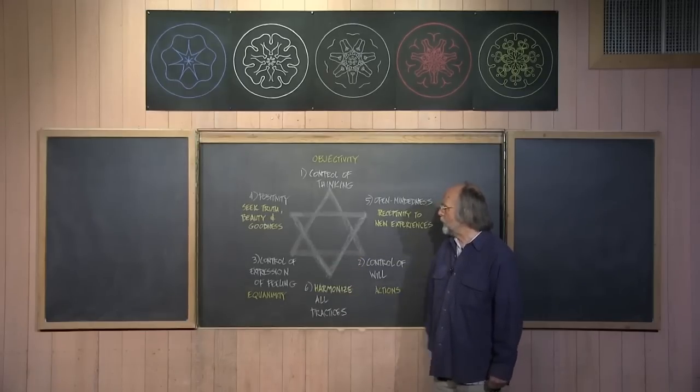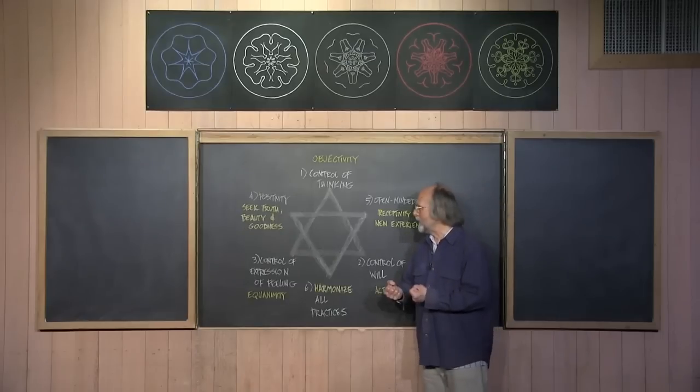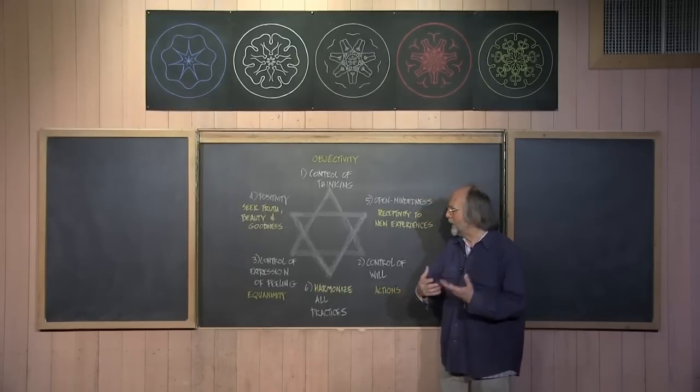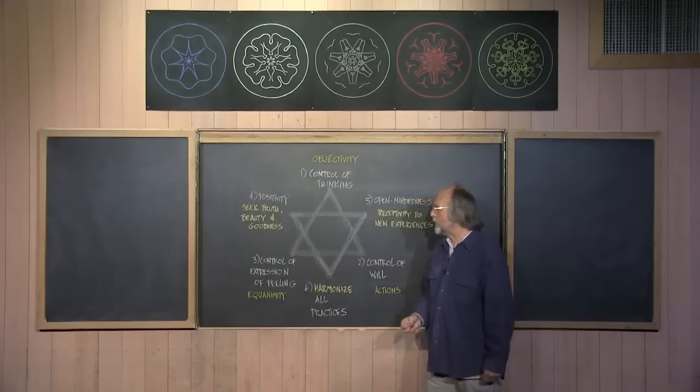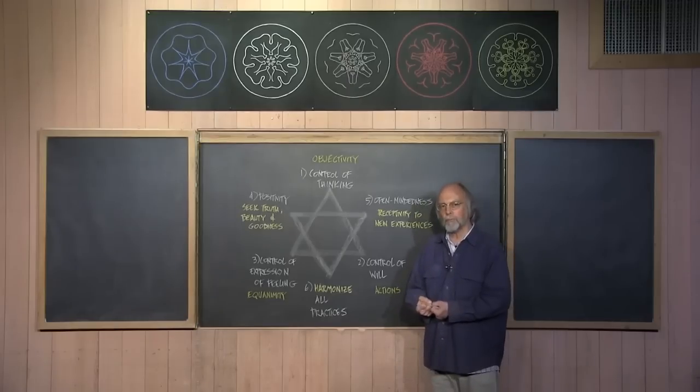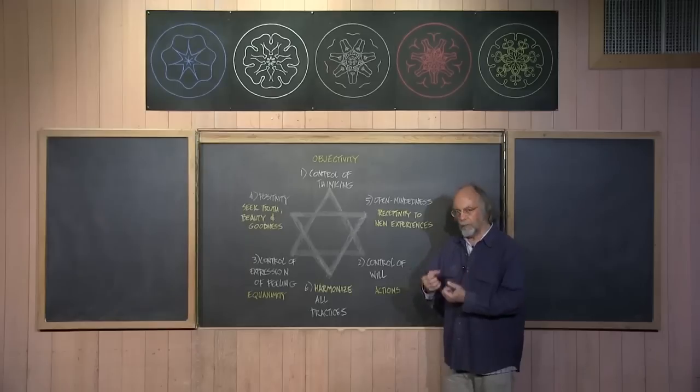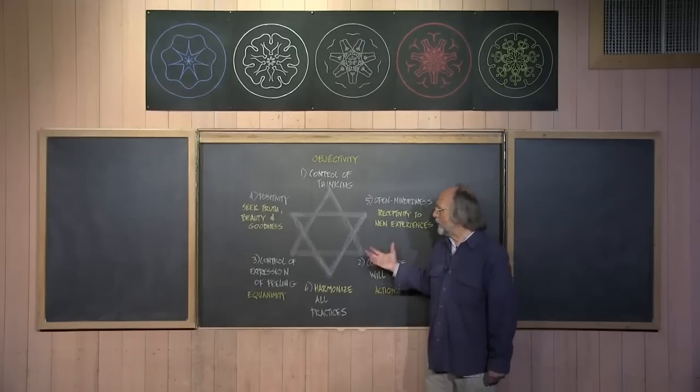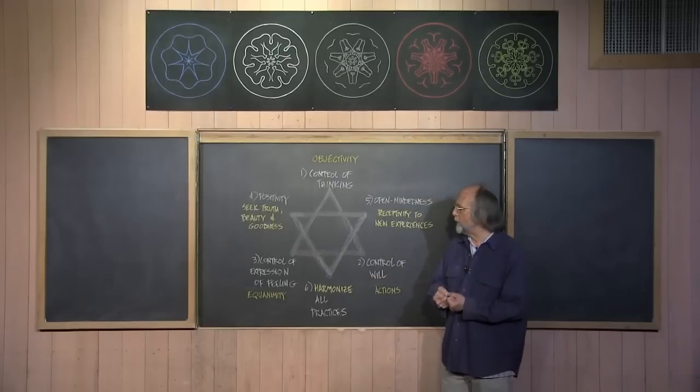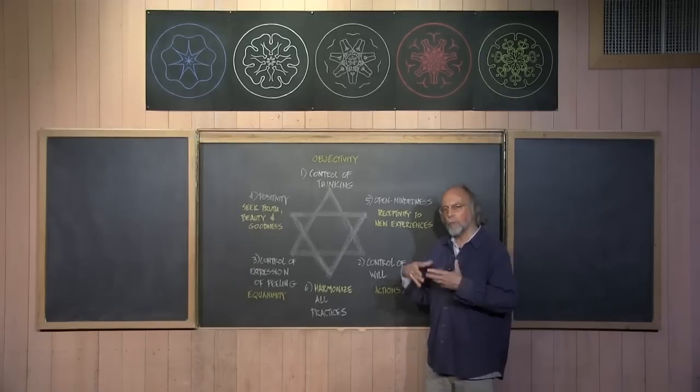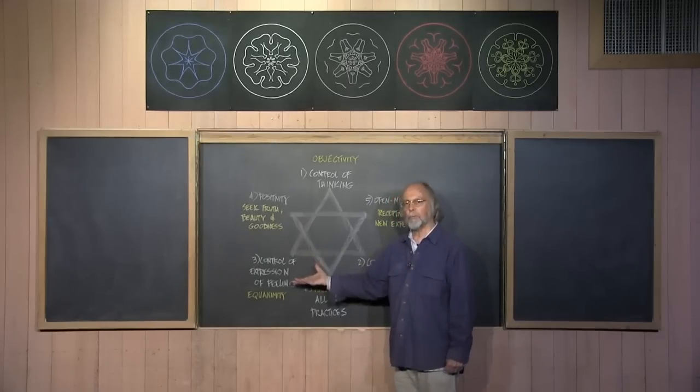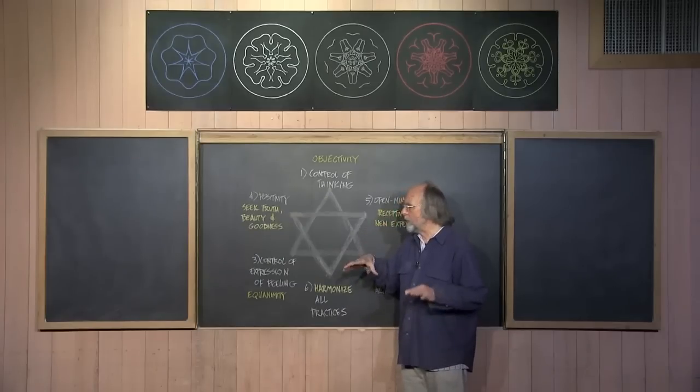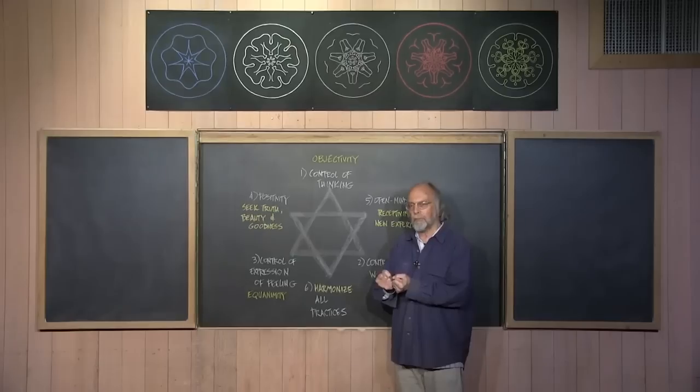The third activity is the one that often brings a certain feeling of discomfort to human beings. And we need to understand what Rudolf Steiner is saying when he speaks about the control of the expression of feeling. He says, of course, we have a tremendous range of feelings. We have joy and sorrow, we have pleasure and pain, we have sympathy and antipathy. He says, of course, the human being experiences these feelings very deeply. In a certain sense, you could say a feeling that runs away with us becomes an emotion. And in a certain way, we want to be able to control the expression of our feelings.